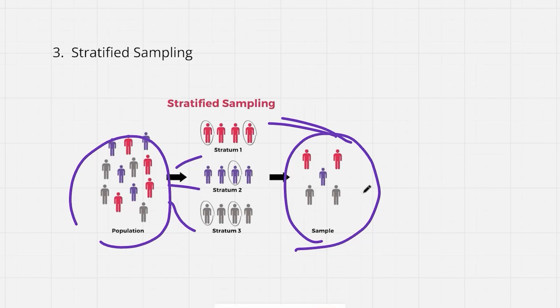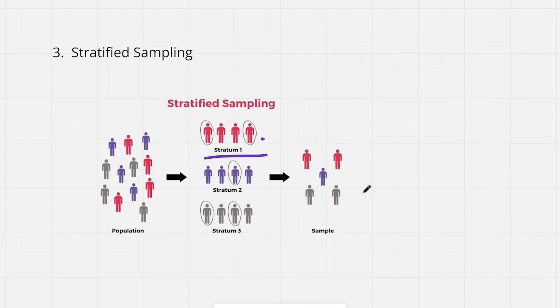Say for example, you are surveying students in a school and you want to include opinions from every grade level. You are going to divide students into groups based on their grades. My stratum 1 represents my grade 1 students, stratum 2 represents my grade 2 students, stratum 3 represents my grade 3 students and so on. Out of these three strata, I am going to randomly select a few students from each grade. This way, every grade is going to have an equal say in my survey. Stratified sampling ensures that your data reflects all parts of the population making your results more balanced and accurate.